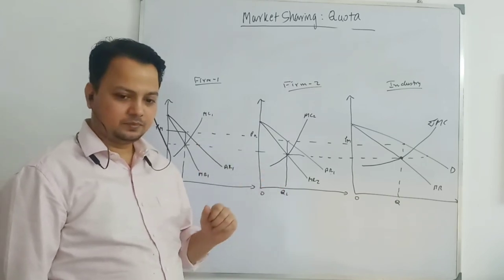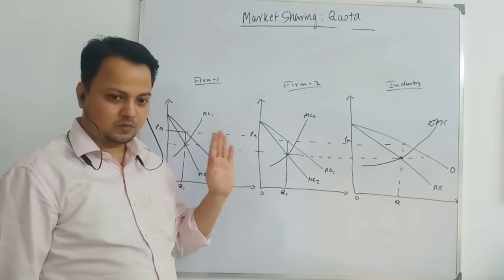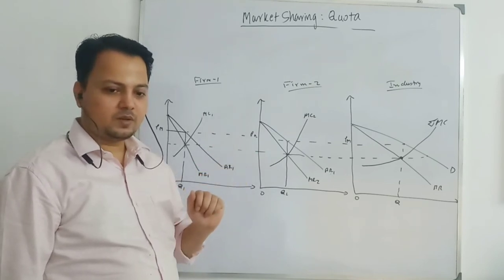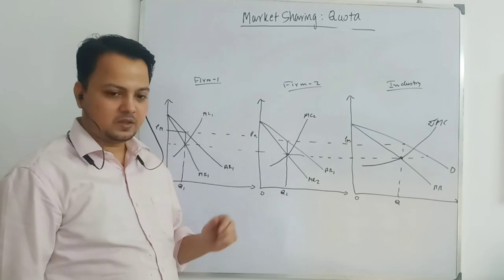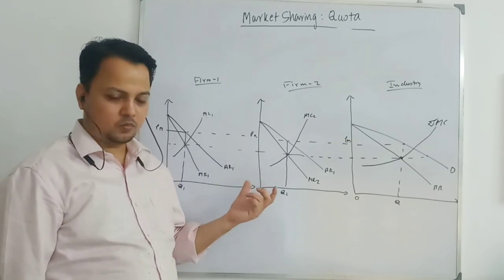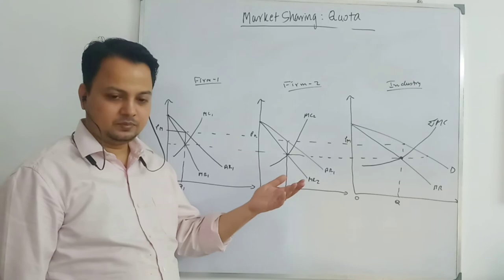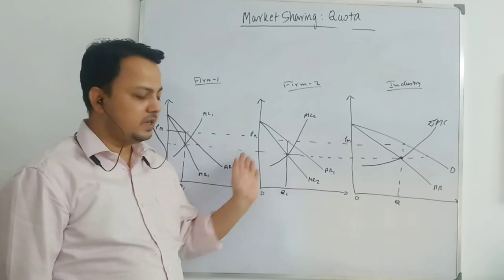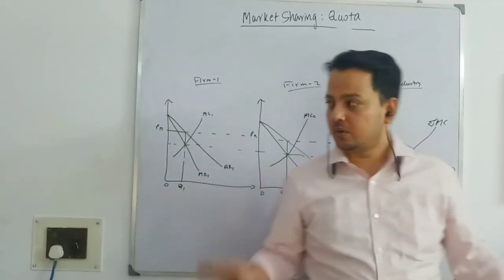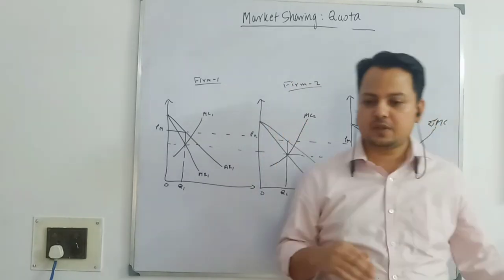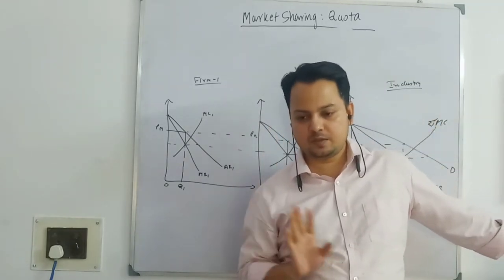We are setting the quota, but if costs differ, the low-cost firm can increase its profit by reducing the price. Why would it hold the quota output? It can increase the output — they have an incentive to deviate. That is why we are saying that in the quota, firms can charge different prices.